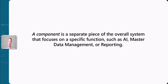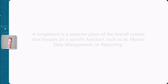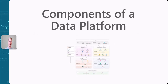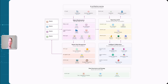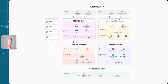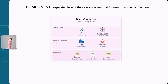A data platform is made up of multiple components, and a component is a separate piece of the overall system that focuses on a specific function. Examples include an AI component, a master data management component to make sure your data is clean, or reporting tools such as Power BI. Here we have lots of different components working together to create the golden data we can use across the business.